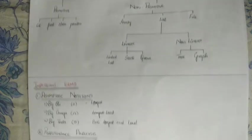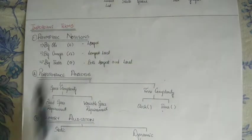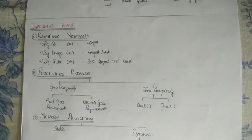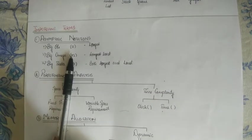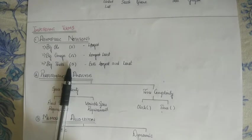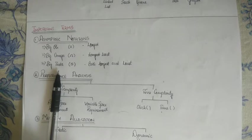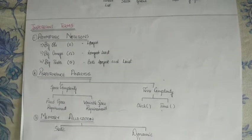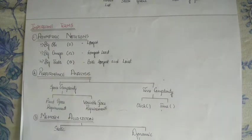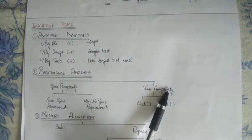Moving on to important terms, as you can see in the screen, asymptotic notations and performance analysis. Asymptotic notations are big O, big Omega, and big Theta. So big O is the measure of the longest amount of time taken by algorithm to complete execution. Big Omega is the measure of least amount of time taken by the algorithm to complete execution. Moving on to performance analysis, we can analyze the performance based on space or time. So space complexity and time complexity. Space complexity can be divided as fixed space requirement or variable space requirement. And time complexity, clock and time.